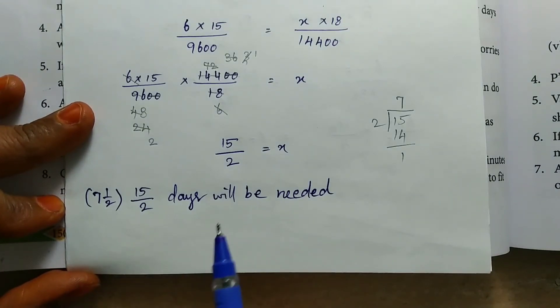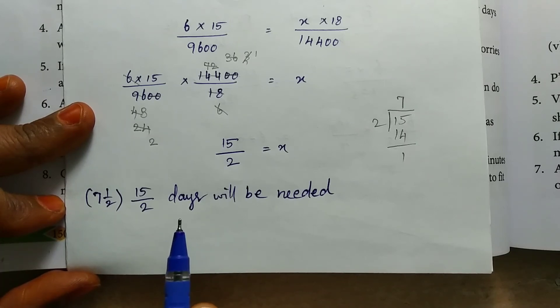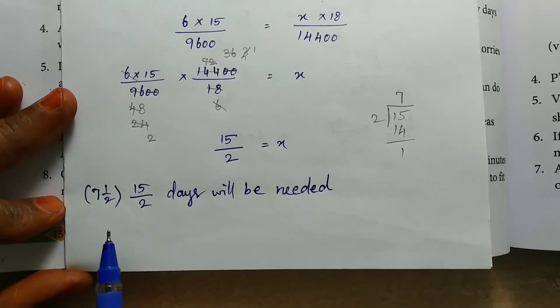In this problem, to produce 14400 soaps, working 18 hours a day, it takes overall 7 and a half days.